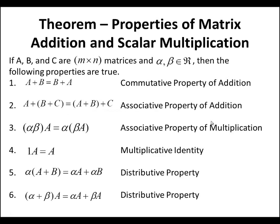Theorem: Properties of Matrix Addition and Scalar Multiplication. Let A, B, and C be matrices and alpha, beta be real numbers. Then the following are true: (1) commutative property of addition, A plus B equals B plus A; (2) associative property of addition, A plus (B plus C) equals (A plus B) plus C; (3) associative property with respect to scalar multiplication, alpha*beta*A equals alpha*(beta*A); (4) 1 times A equals A; (5) distributive property, alpha*(A plus B) equals alpha*A plus alpha*B; (6) (alpha plus beta)*A equals alpha*A plus beta*A.